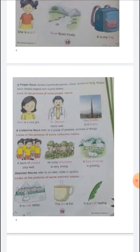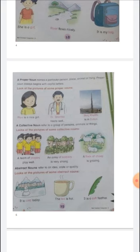Turn to page number 19. A proper noun names a particular person, place, animal, or thing. Proper noun always begins with a capital letter. In a proper noun, we indicate a person or thing particularly. For example: Rhea is a nice girl — in a huge crowd, we indicate especially Rhea, that Rhea is a nice girl.